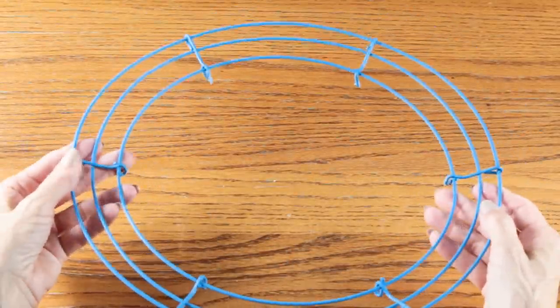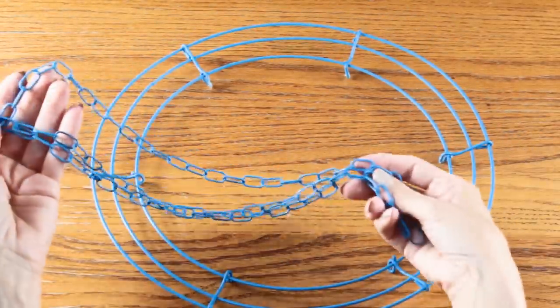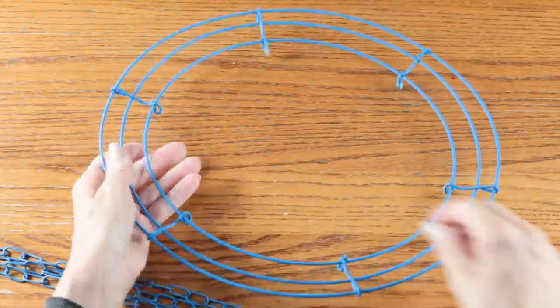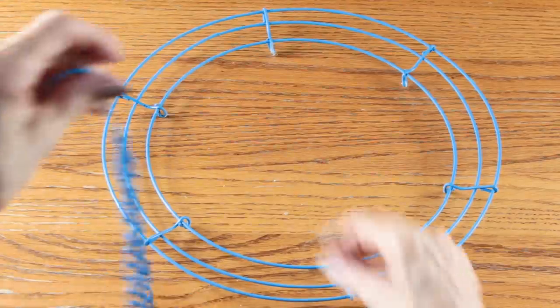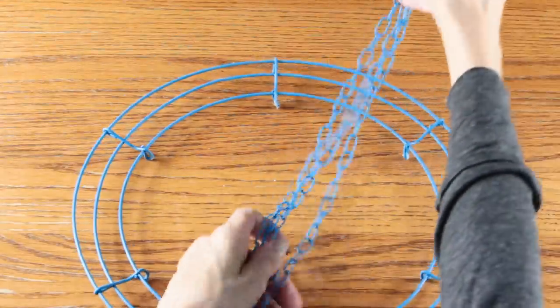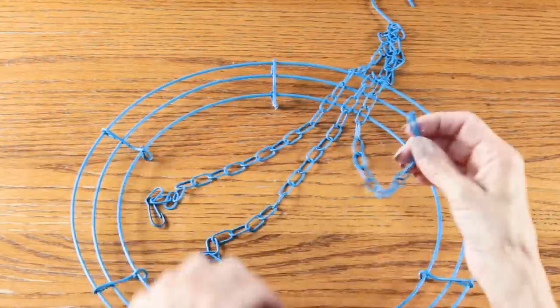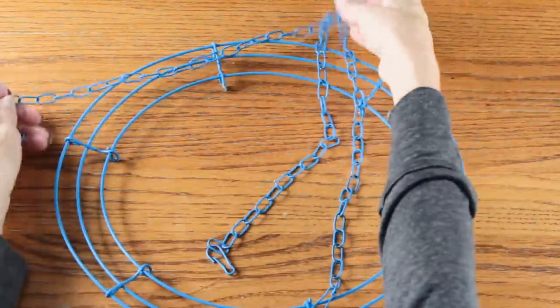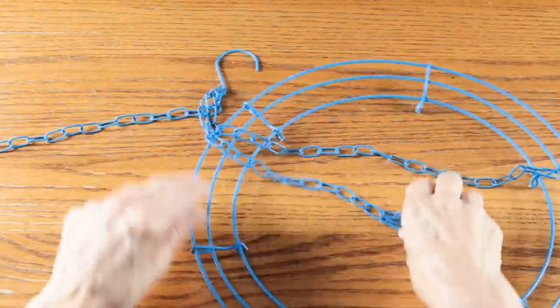And now it's time to assemble our bird bath. There are six supports on the wreath frame. All you need to do is attach one chain to every other support.